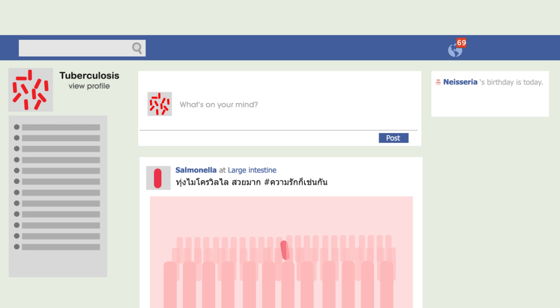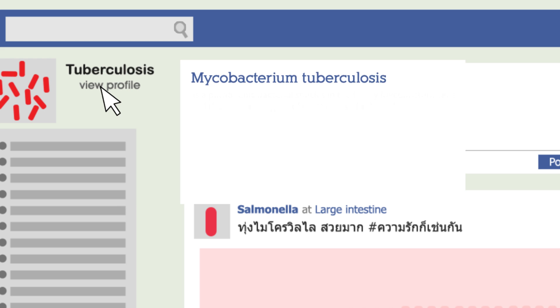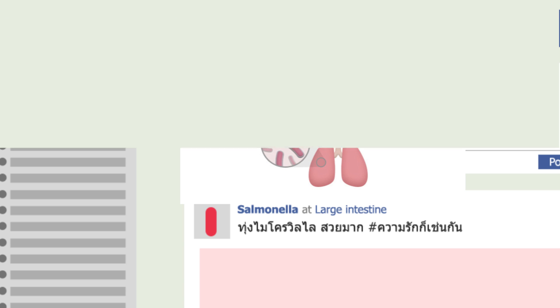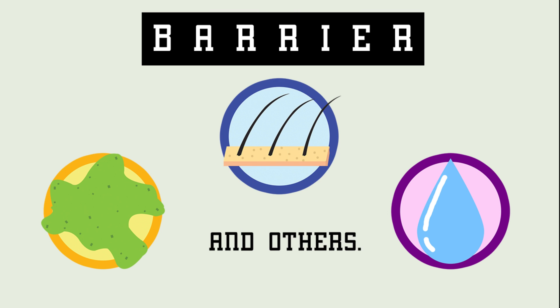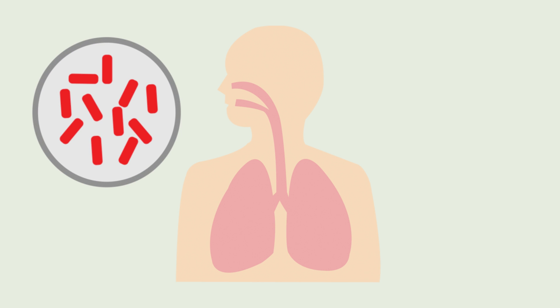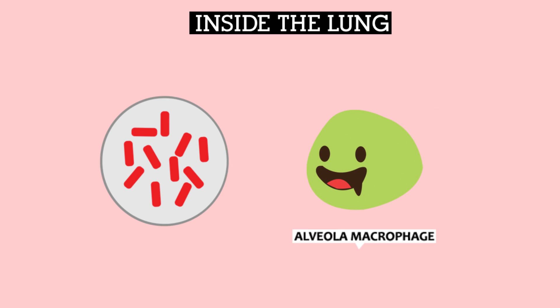Let me use Mycobacterium tuberculosis, which causes tuberculosis (TB) disease, as a model for combating intracellular bacteria. Let's focus first on the physical barriers, such as mucus, cilia, sweat, and fatty acids. MTB can get into our body by inhalation of air droplets containing bacteria.